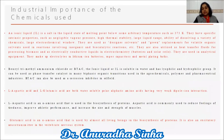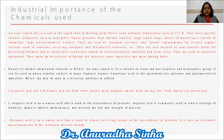Coming to the industrial importance of the chemicals used here: an ionic liquid is actually a salt with a melting point below some arbitrary temperature such as 373 Kelvin, having intrinsic properties such as negligible vapor pressure, high thermal stability, large liquid range, large electrochemical window. It is used as designer solvents, as a green replacement, in reactions involving organic and bio-catalytic reactions, and as an electrolyte and conductive liquid in electrochemistry, batteries, solar systems, lithium-ion batteries, and supercapacitors.